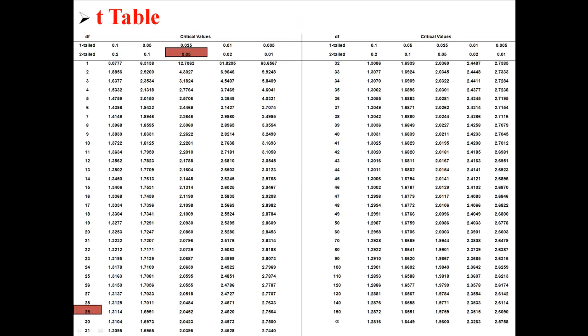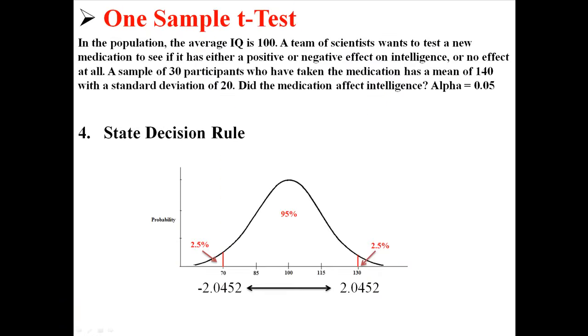Remember that our alpha level is 0.05. This is a two-tailed test and it has 29 degrees of freedom. So you can see I have 0.05 and 29 marked in red. And now if we draw the arrows over here, this is the critical value we're going to use. We're going to use 2.0452. And that's how I found it using the alpha level and the degrees of freedom for the t-test. So that is our critical value.